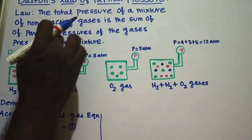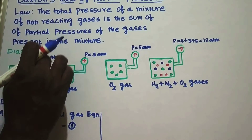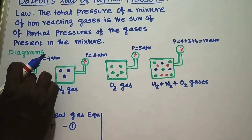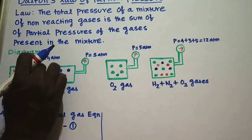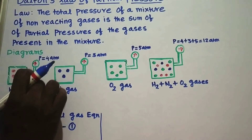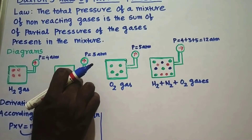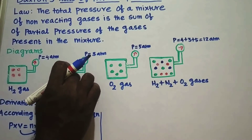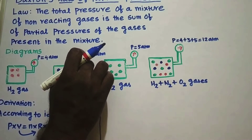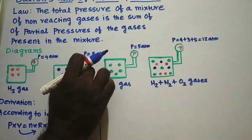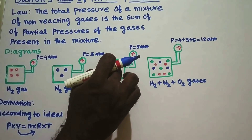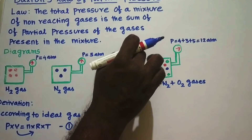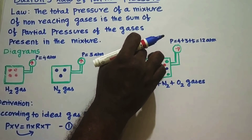First of all, we are going to see a diagram. Now let us consider a container filled with hydrogen gas, connected with a pressure gauge. The pressure is equal to 4 atmosphere. Now let us consider another container that is also filled with N2 gas, also connected with a pressure gauge. The pressure is equal to 3 atmosphere. Now let us consider another container filled with oxygen gas, with a pressure gauge in which the pressure is equal to 5 atmosphere.